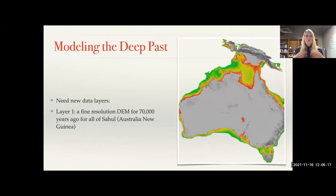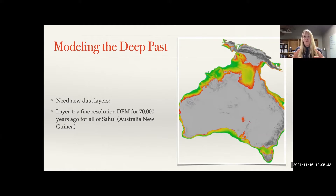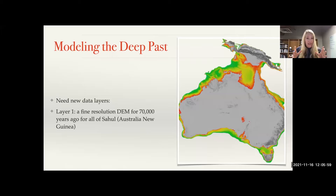Building our model, we needed to bring in different data layers. First, there was no digital elevation model for Sahul. There is fine-scale mapping of the ocean floor, so we essentially drained the oceans to the continental extent 70,000 years ago and stitched these together to create a full digital elevation model of Sahul. We're going to the ocean floor, so we're not including vast coral reefs around modern Australia, but this gives us a general idea of what the continent of Sahul would have looked like.